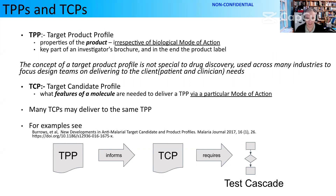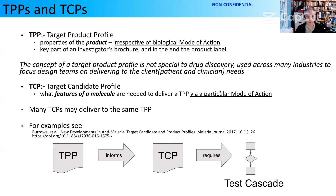At the next level, a target candidate profile describes the features of a molecule that we reasonably think will mean it can deliver a target product profile via a particular mode of action. Now we've gone more into the science, further away from the bedside. Obviously, many TCPs can deliver the same TPP — you might have multiple different ways of inhibiting viral replication, any of which might deliver reduced viral replication and better outcomes in a virally-driven disease.